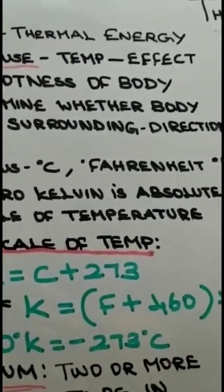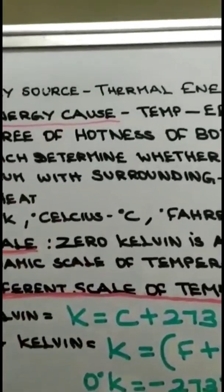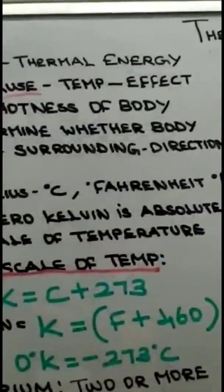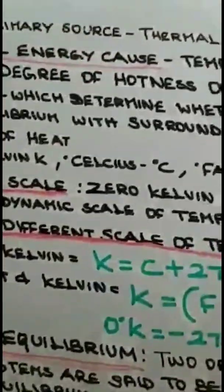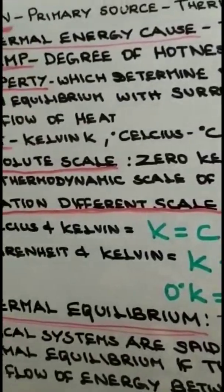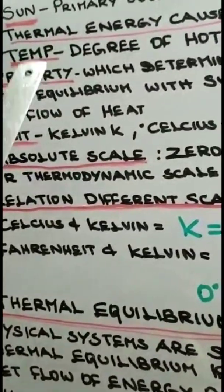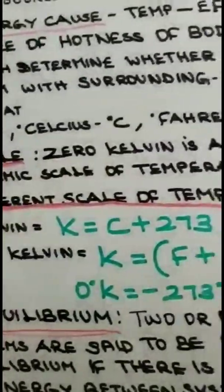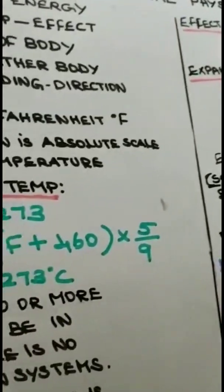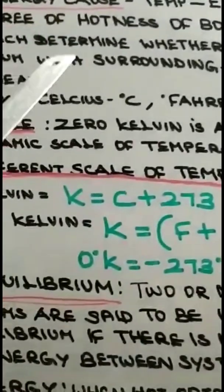First we will see what is temperature. Temperature is nothing but the degree of hotness of a body. The temperature is higher for a hotter body and less for a colder body. It has two important properties - temperature determines whether the body is in equilibrium with the surroundings and also temperature gives us the direction of the flow of heat.